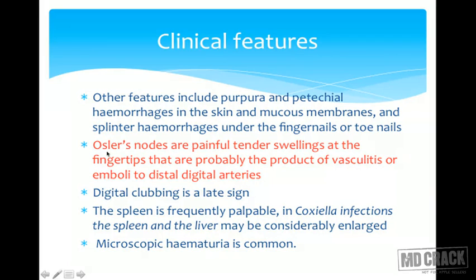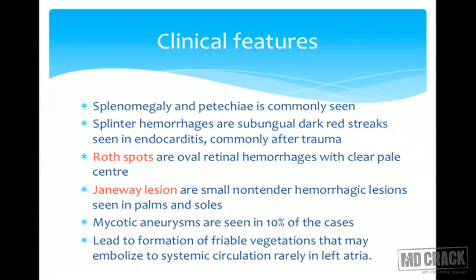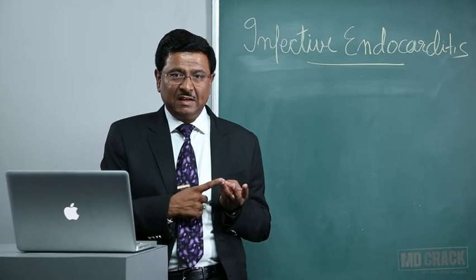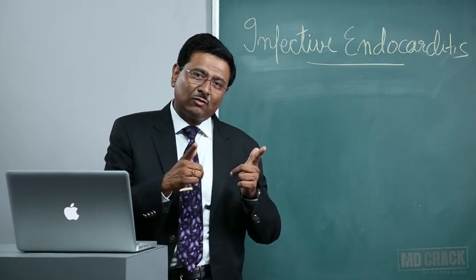Osler nodes are commonly seen with infective endocarditis. Digital clubbing is a late sign; the spleen is frequently palpable. Splinter hemorrhages are subungual dark red streaks seen in endocarditis, commonly after trauma. Roth spots are oval retinal hemorrhages with a clear pale center. Janeway lesions are small, non-tender hemorrhagic lesions seen in palms and soles. Osler nodes, Roth spots, and Janeway lesions are all seen in infective endocarditis — important from an MCQ point of view.